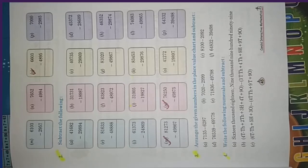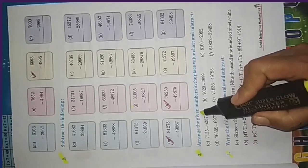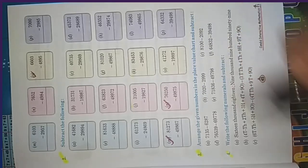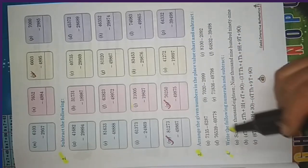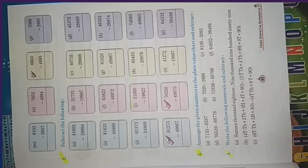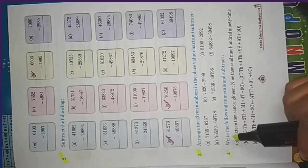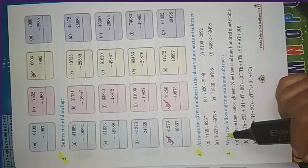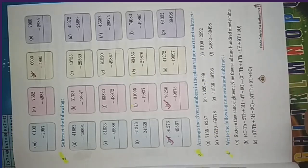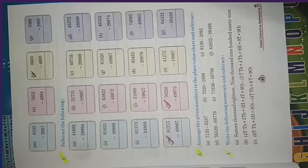Question number 3 says: arrange the given numbers in the place value chart and subtract. The numbers are not arranged in column form, so we have to arrange them in the place value chart. The place value chart means you write the ones, tens, hundreds, thousands places and arrange the numbers properly below that.